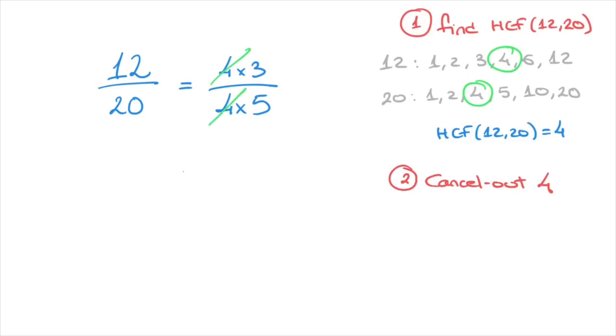And the fraction can now be written in its simplified form by writing that it's equal to whatever was left on the numerator, so in this case that was 3, over whatever was left on the denominator. So in this case, that's 5. And that's the final answer. We've just written 12 over 20 in its simplified form.